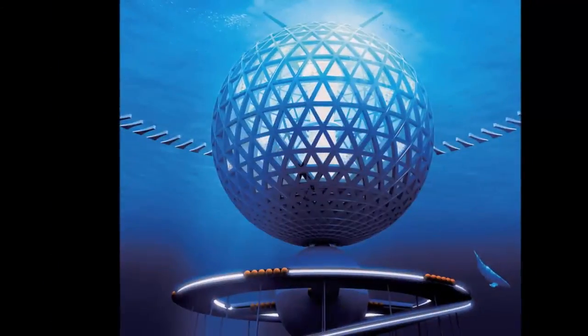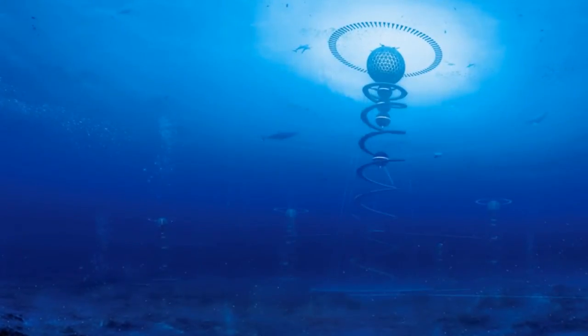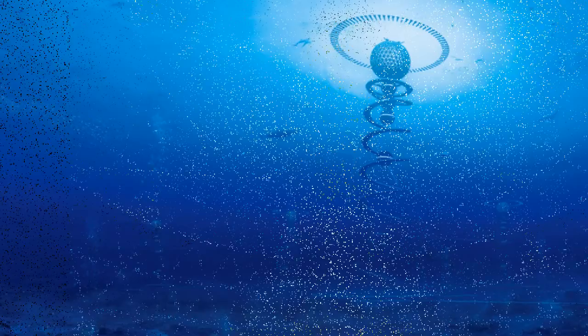The proposed ocean spiral would consist of a large sphere just below the surface and about 546 yards in diameter, occupied by homes, businesses, and hotels.